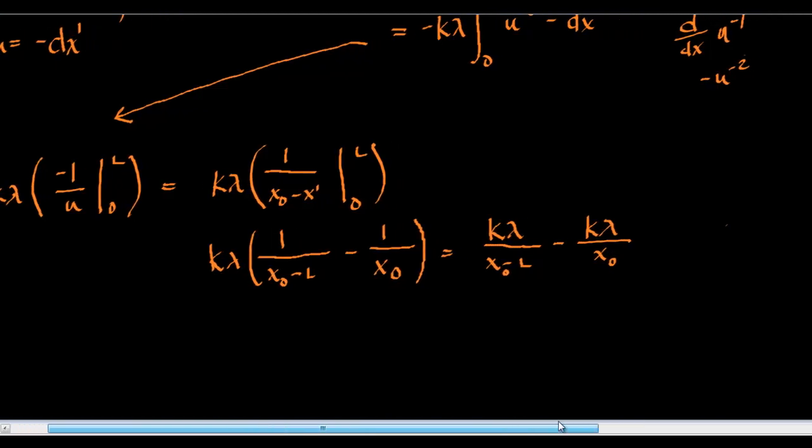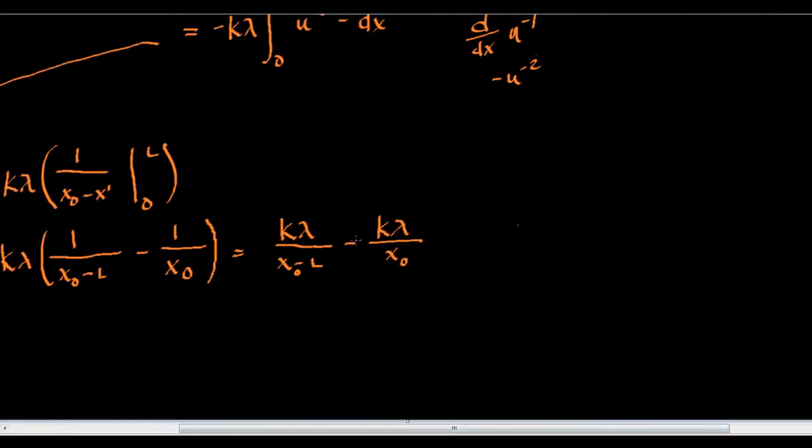And, this can be even further simplified by making the denominators like by multiplying by 1. So, we'll multiply this side by x naught. So, we'll get x naught k lambda over x naught times x naught minus l minus. And, we'll multiply this side by x naught minus l. And, we'll get x naught minus l times k lambda over x naught times x naught minus l.